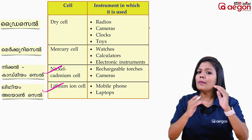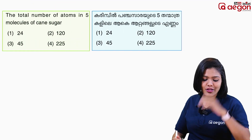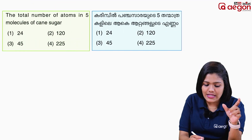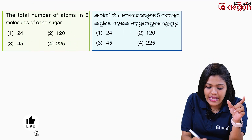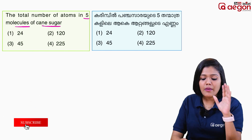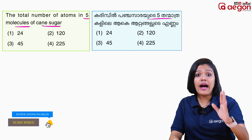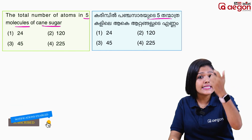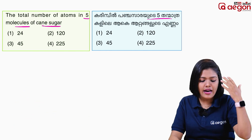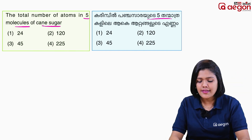Let's move to the second question. The total number of atoms in 5 molecules of cane sugar. The options are: 24, 25, 45, 25, 25.